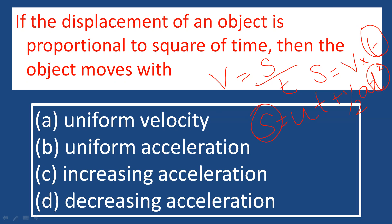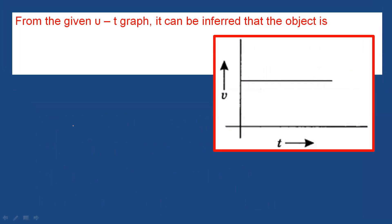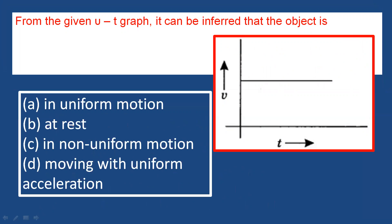Displacement of an object is proportional to the square of time. When the VT graph is parallel to the time axis, the velocity value is constant — that is the condition for uniform motion.